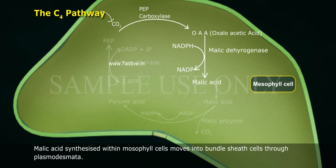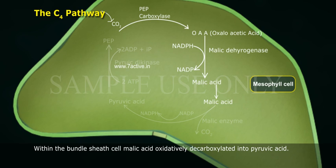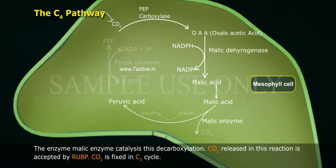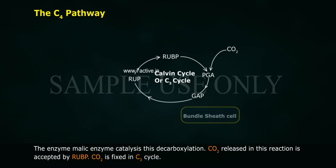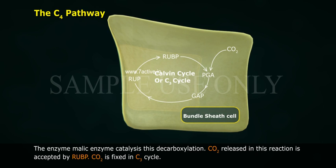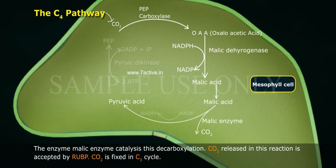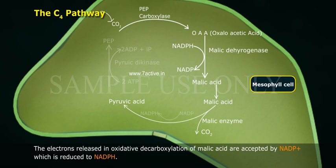Malic acid synthesized within mesophyll cells moves into bundle sheath cells through plasmodesmata. Within the bundle sheath cell, malic acid is oxidatively decarboxylated into pyruvic acid, a reaction catalyzed by malic enzyme. The CO2 released in this reaction is accepted by RuBP and fixed in the C3 cycle. The electrons released during oxidative decarboxylation of malic acid are accepted by NADP+, which is reduced to NADPH.